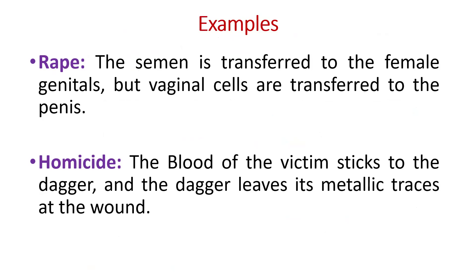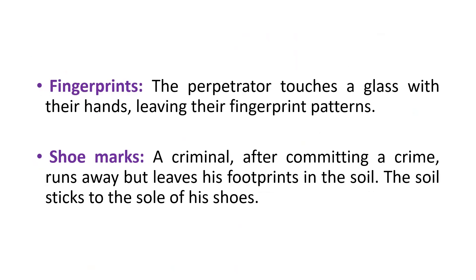Some examples: In rape cases, the semen is transferred to the female genitals but vaginal cells are transferred to the penis — again, an exchange. In homicide, the blood of the victim sticks to the dagger and the dagger leaves its metallic traces at the site of the wound. For fingerprints, the perpetrator touches a glass leaving their fingerprint pattern. For shoe marks, a criminal runs away but leaves footprints in the soil, and the soil sticks to the sole of his shoes.